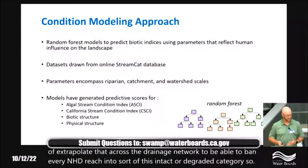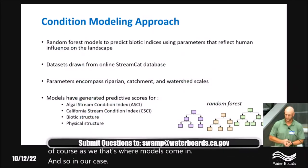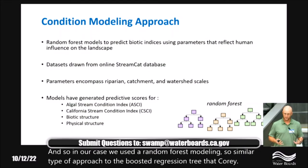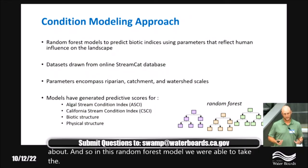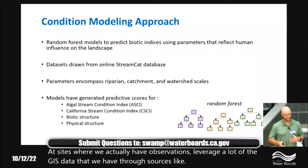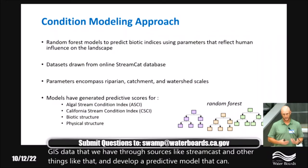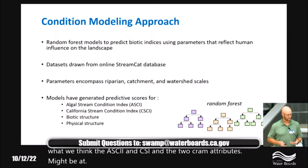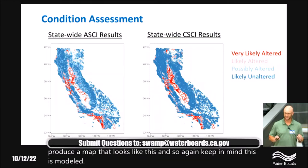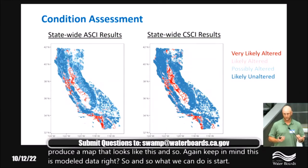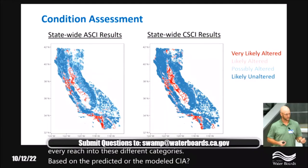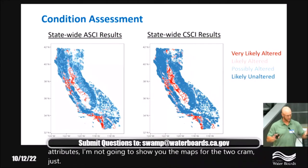In the random forest model, we took the wealth of data from sites where we have actual observations and leveraged GIS data from sources like StreamCat to develop a predictive model that can predict what ASCI, CSCI, and the two CRAM attributes might be at unmonitored reaches. This allows you to produce a map covering the entire drainage network. Keep in mind this is modeled data. We can then bin every reach into different categories based on predicted or modeled CSCI, ASCI, and the two CRAM attributes.